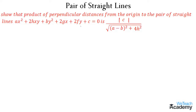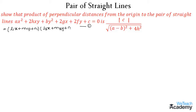This is the given equation — let us consider it as equation 1. Now let us consider this equation as equal to (l₁x + m₁y + n₁) into (l₂x + m₂y + n₂).